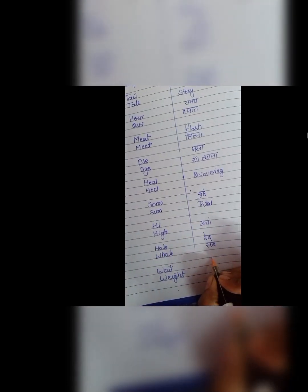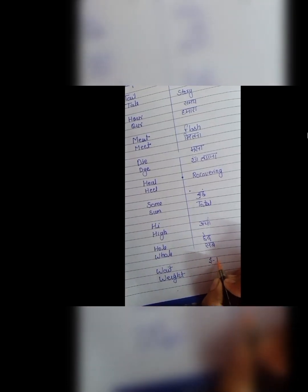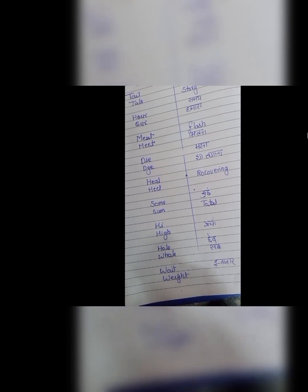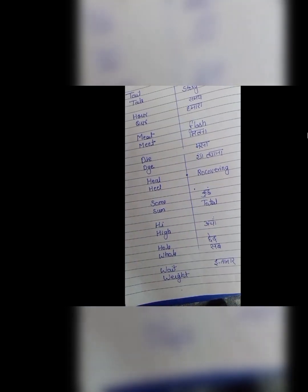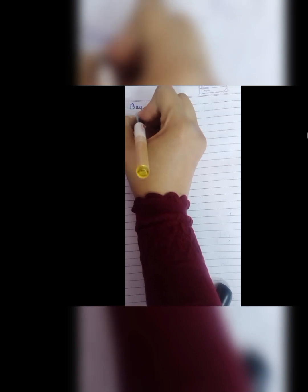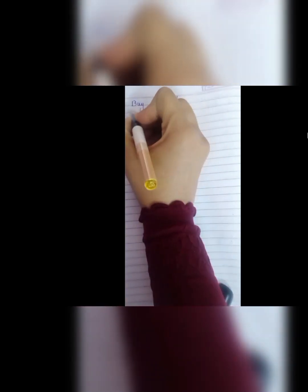Next is wait and weight. W, A, I, T, wait means kisi ka intezar karna. And W, E, I, G, H, T, weight means kisi chiz ka weight karna. Matlab kitne uska kya weight hai kya wazan hai us chiz ka. Woh wala weight.